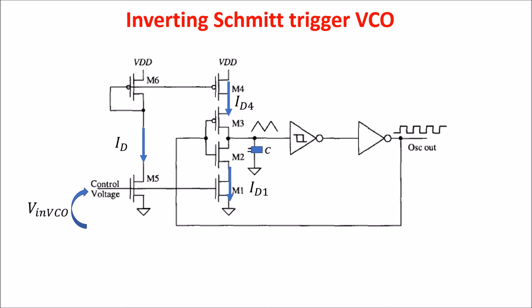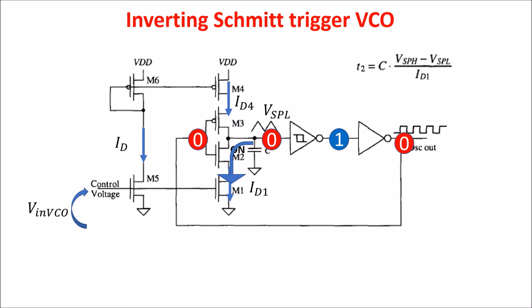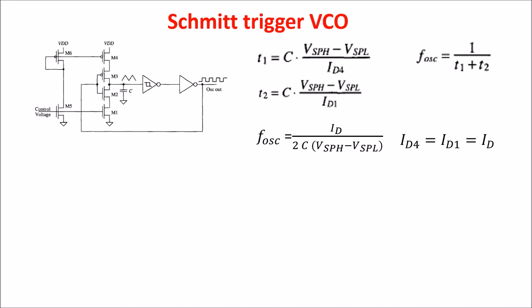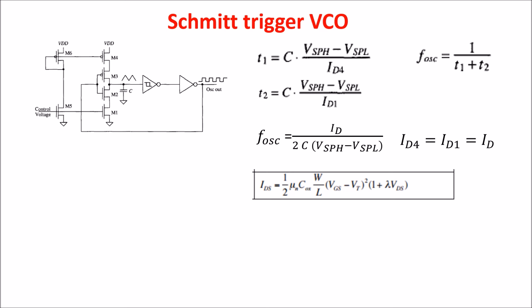When the output is high, the input of the first inverter is also high and M2 is on, creating a path to ground so the capacitor starts to discharge, lowering the voltage at the Schmitt Trigger input. When the input voltage arrives at VSPL, the Schmitt Trigger output changes from low to high and the output switches again. The discharging time depends on current ID1, which depends on VNVCO. So the oscillation period is the sum of the charging and discharging times, and assuming ID4 equals ID1, the oscillation frequency depends on ID, which is related to VNVCO so the frequency varies with the square root of the input voltage.